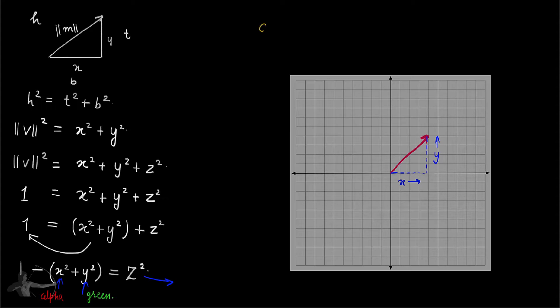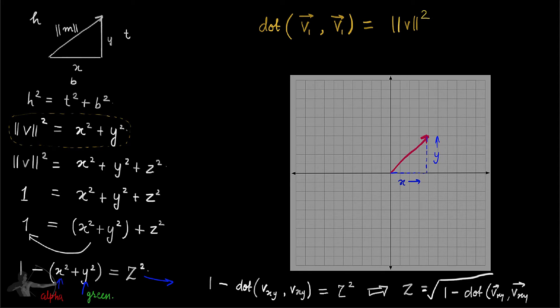There is one more magical thing about the dot product: if we get the dot product of the same vector, vector v1 dot vector v1, this will give us the magnitude² of vector v. We know that magnitude² = x² + y², so we will replace this equation with 1 - dot(vxy, vxy). Our final equation becomes z = sqrt(1 - dot(vxy, vxy)). This is the equation we're going to use to find z.